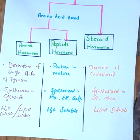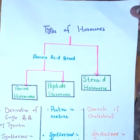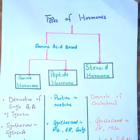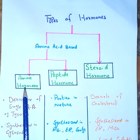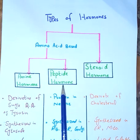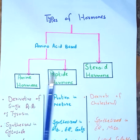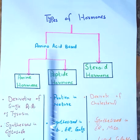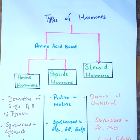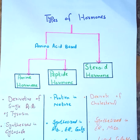Now let's talk about the types of hormones. Hormones are of three major types: amine hormone, peptide hormone, and steroid hormone. Amine and peptide hormones are amino acid-based hormones — they are made from amino acids — while steroid hormones are derivatives of cholesterol.